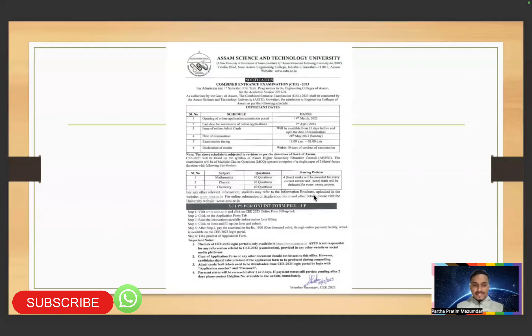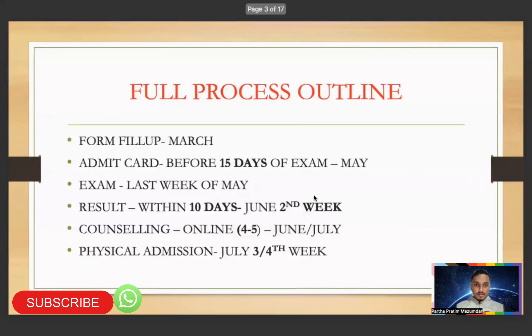Examination last year was on 28th May. Physics, Chemistry, Maths — 40 questions each, total 120 questions. Each question carries 4 marks. Negative marking is one-fourth — so minus 1 for a wrong answer. That's the full process outline.